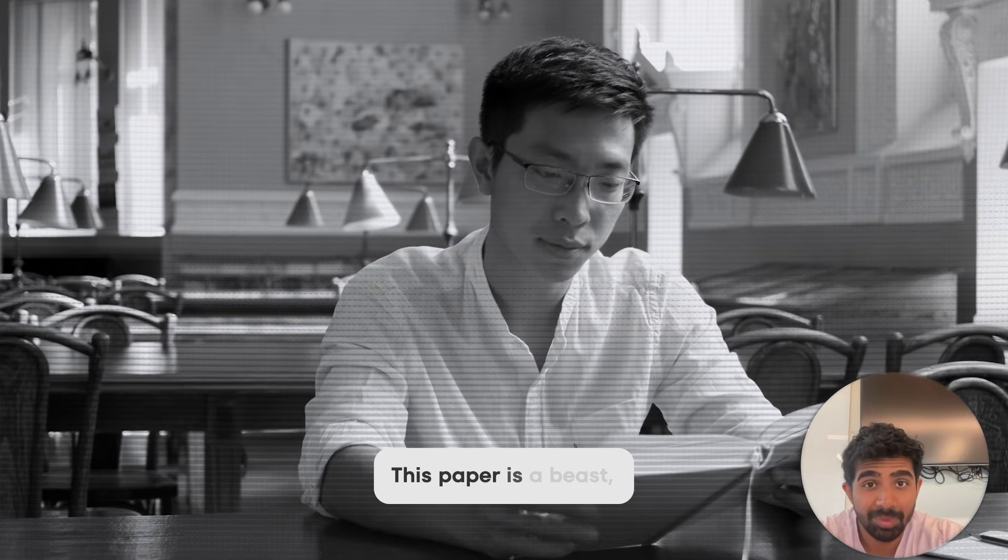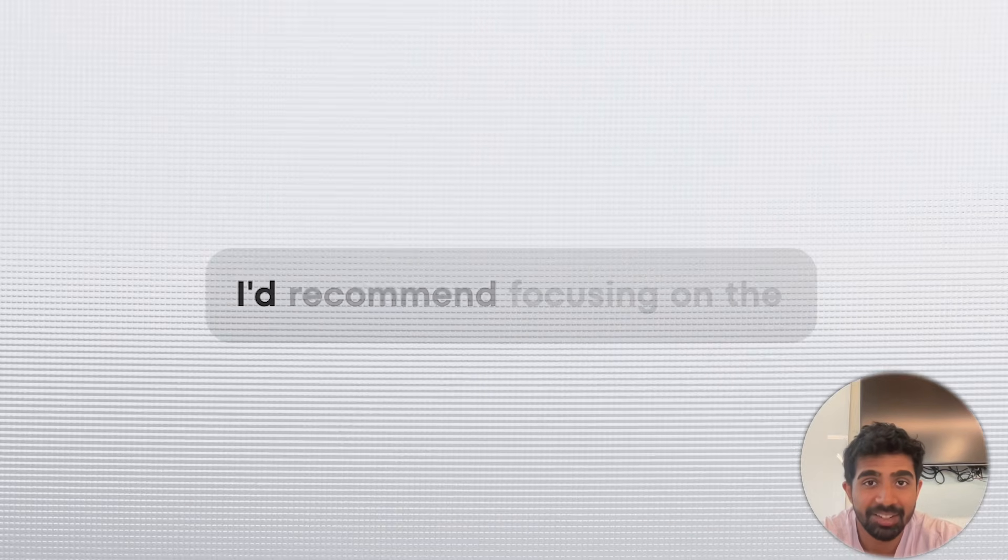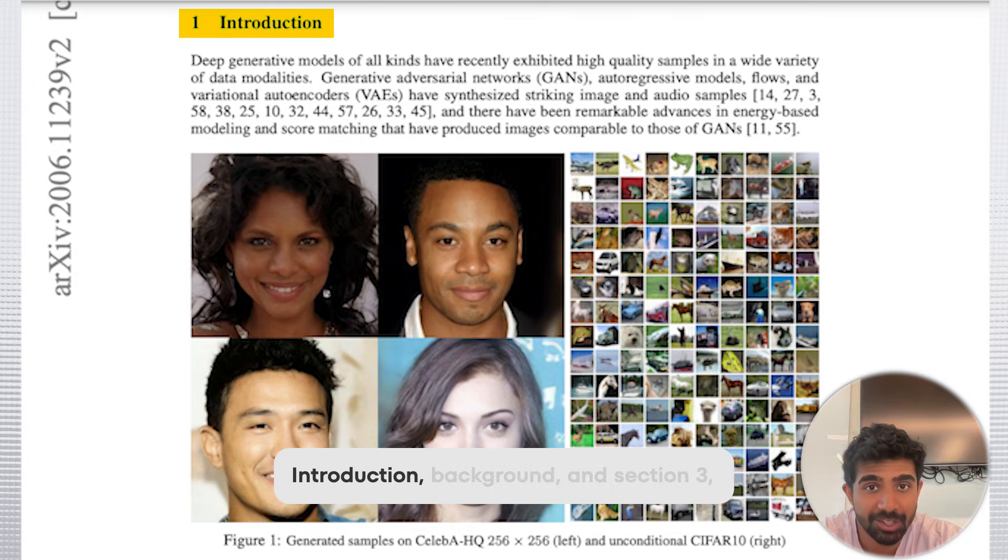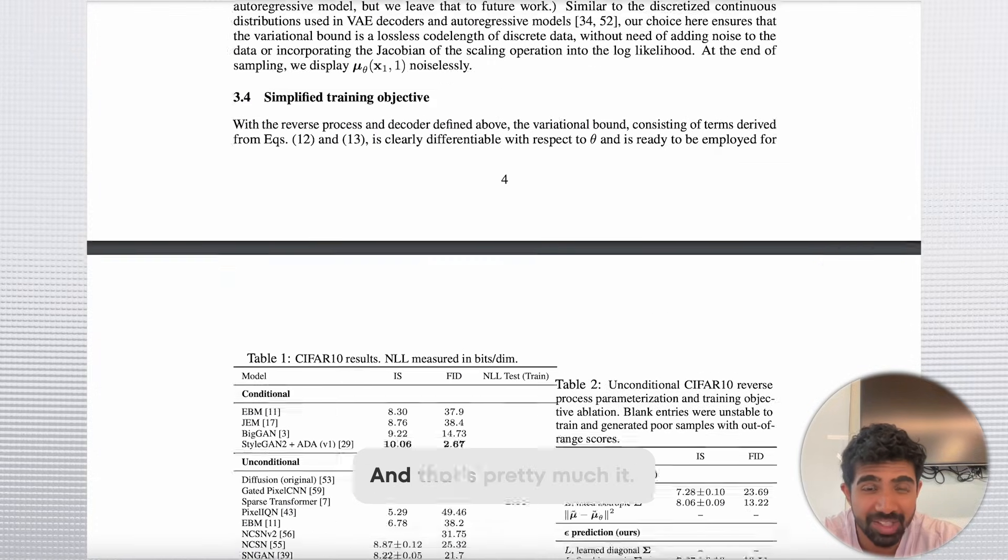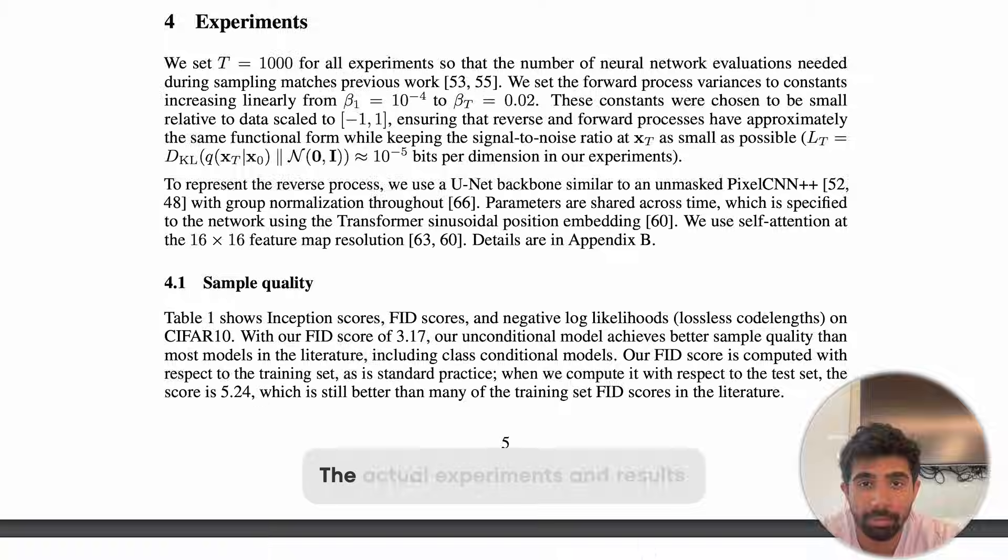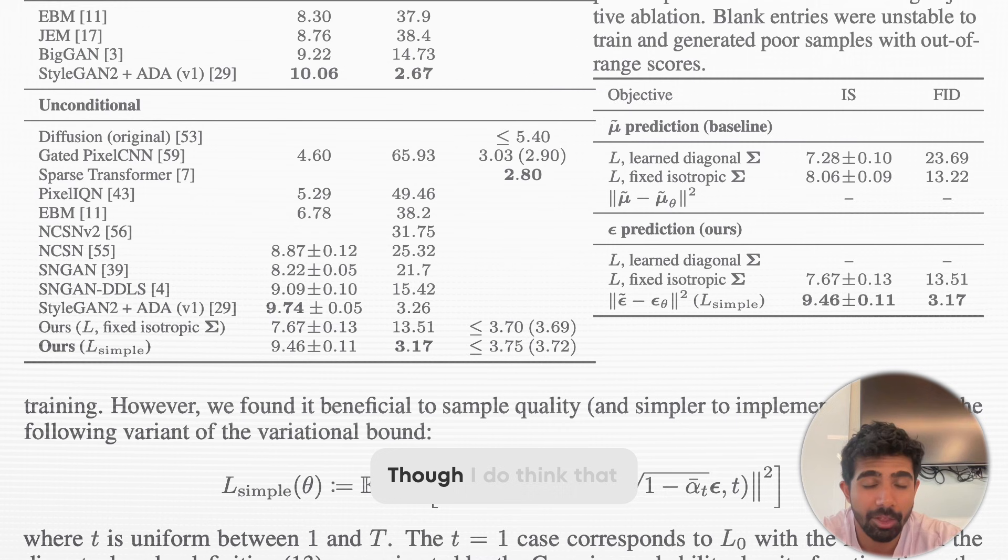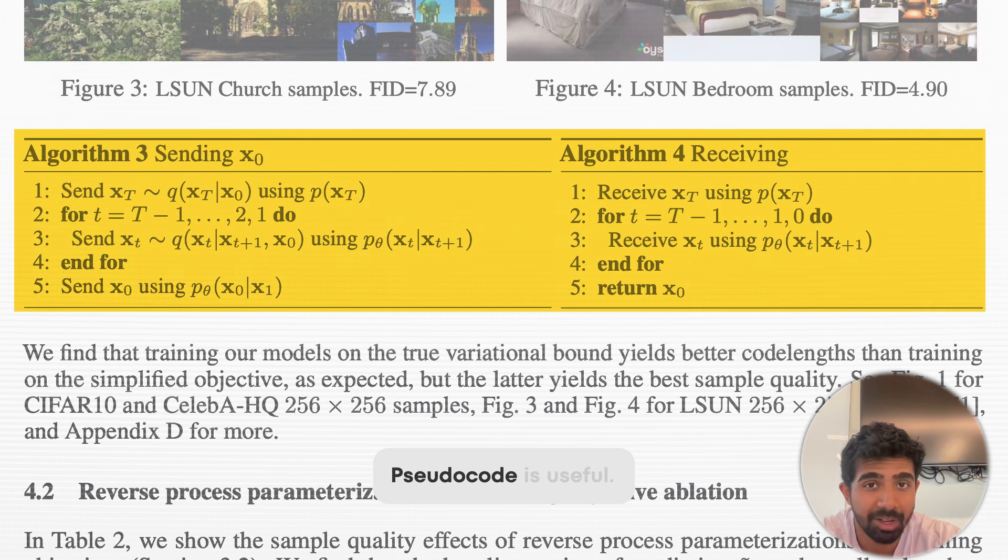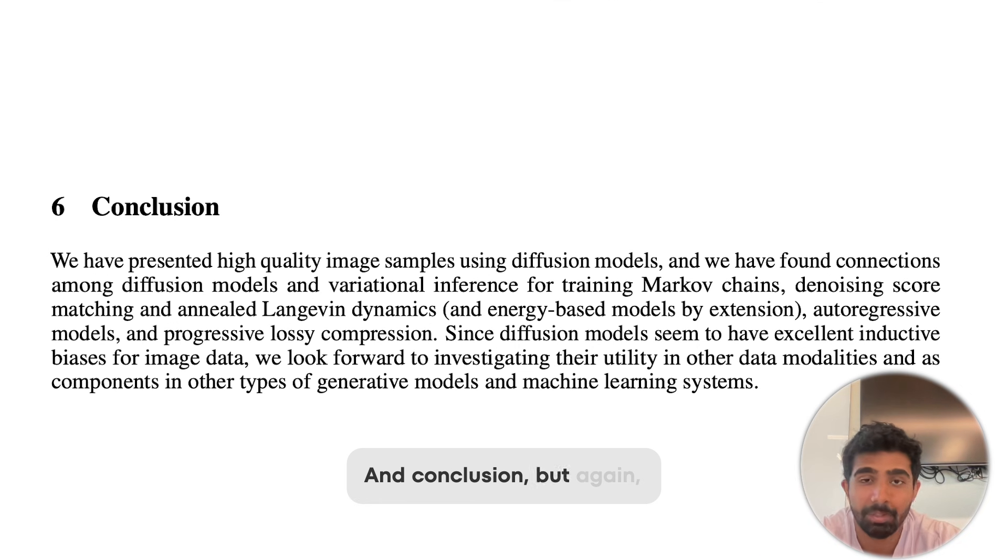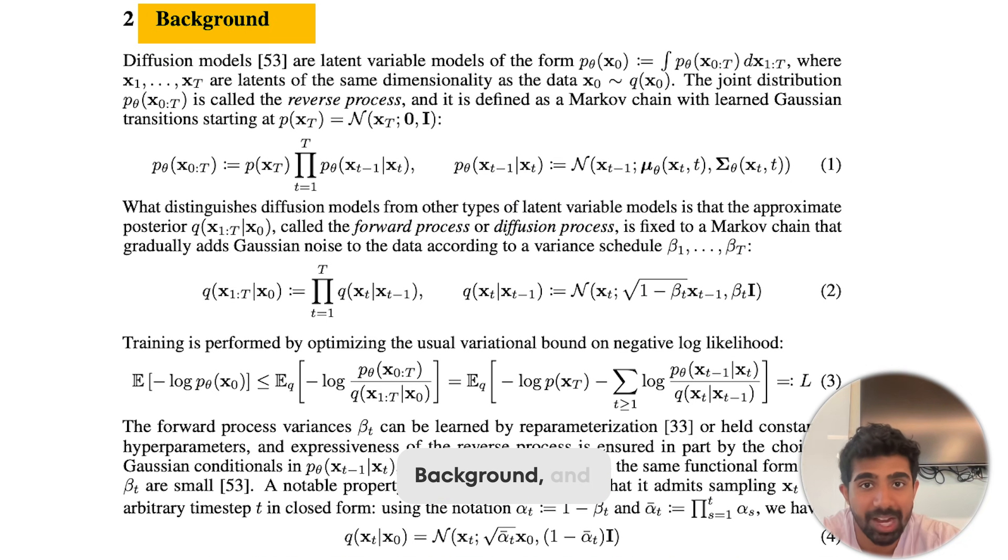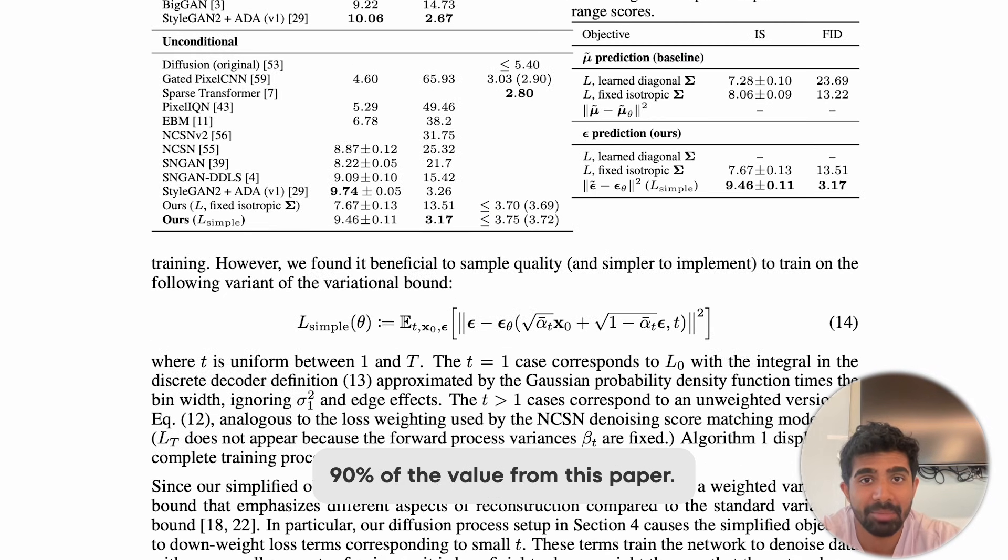I'm not going to lie, this paper is a beast. Even if you have a strong understanding of probability and statistics, I'd recommend focusing on the introduction, background, and section 3, where some of the core results of the paper are discussed, and that's pretty much it. You can mainly skim over the actual experiments and results that the researchers obtained, though I do think that this section that has a little bit of pseudocode is useful. And of course, there is a related work and conclusion, but again, if you make it through the introduction, background, and section 3, you've pretty much attained 90% of the value from this paper.